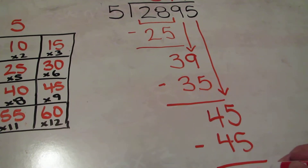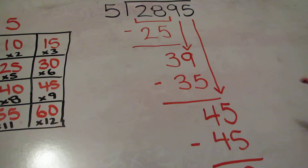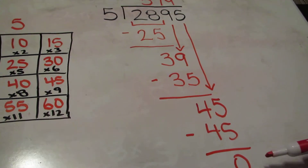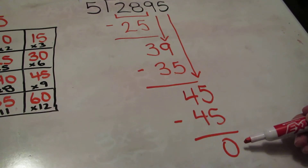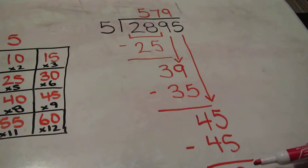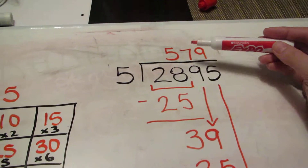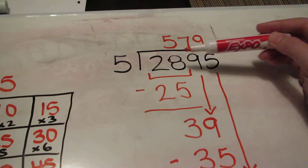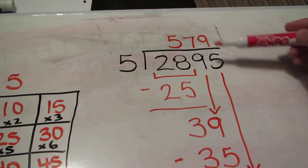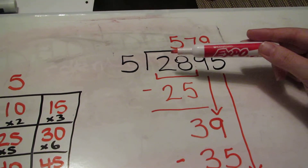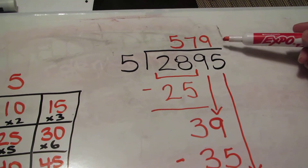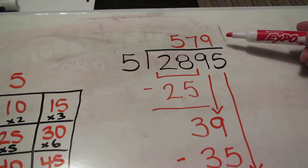5 goes into 45 exactly 9 times. 5 times 9 is 45. I do my subtraction and there is no remainder, so I have nothing extra to put at the top. My answer for 2895 divided by 5 is 579.